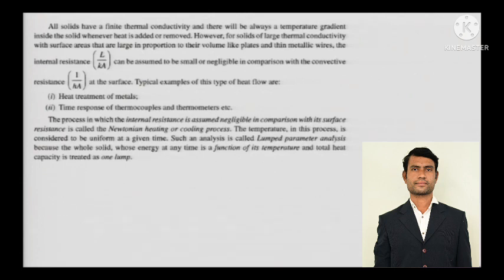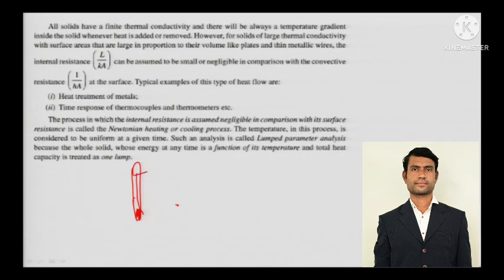Typical examples of this type of heat flow are heat treatment of metals and the time response of thermocouples and thermometers. For instance, when you have a fever and use a mercury thermometer, the mercury doesn't rise instantaneously - it rises gradually to show say 100°F. This gradual rise over time, where temperature changes from minimum to maximum, is a fitting example of transient heat transfer.